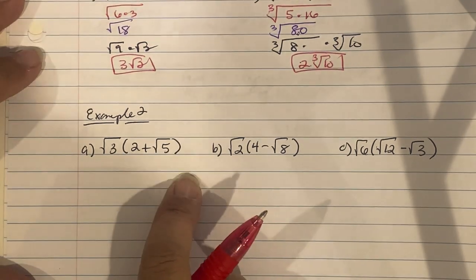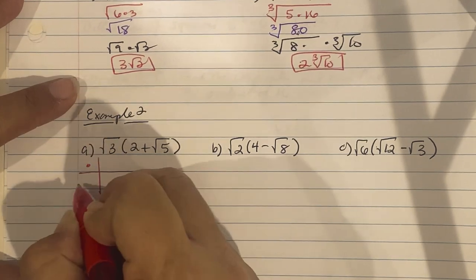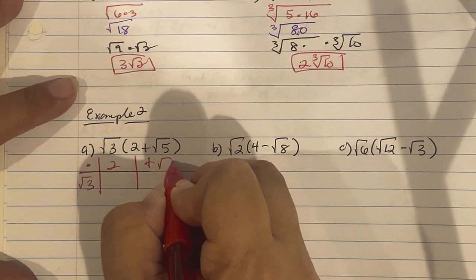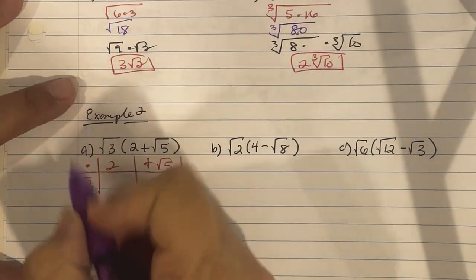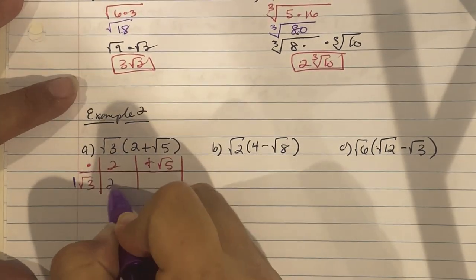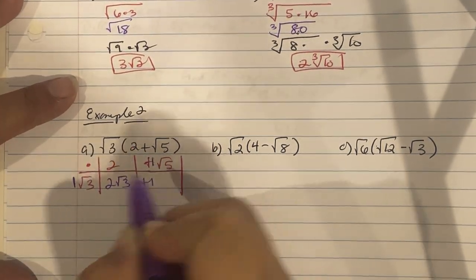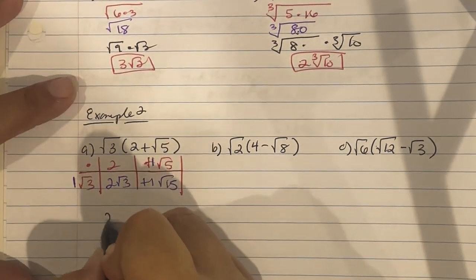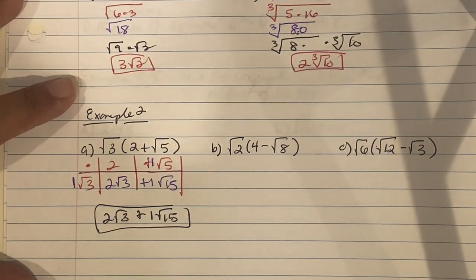Example 2: using the distributive property. I like to use a box method. Square root of 3 is on the outside, and inside we have 2 and positive square root of 5. Multiplying: 1 times 2 gives 2, and the radical 3 times 1 times square root of 5 gives square root of 15. The final answer is 2 square root of 3 plus square root of 15.